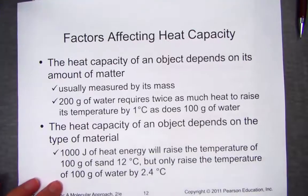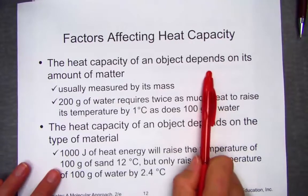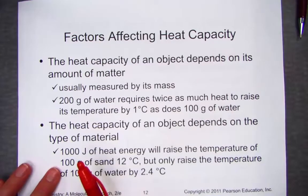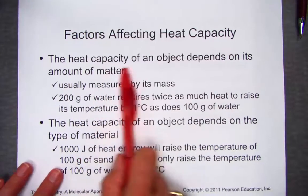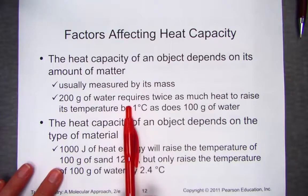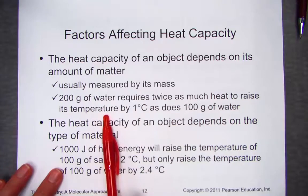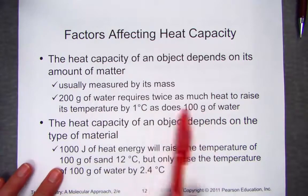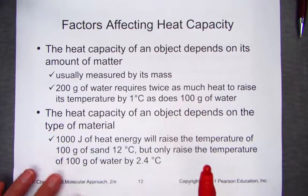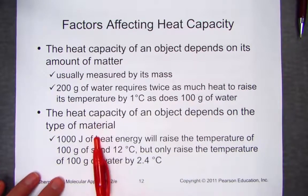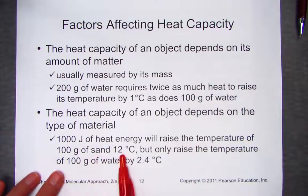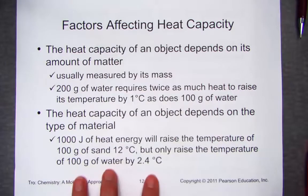The factors that affect heat capacity include what the object is made of and how much of the object you are measuring. Two hundred grams of water requires twice as much heat to raise its temperature as 100 grams of water — that direct proportionality. It also depends on the type of material: a thousand joules of heat energy will raise the temperature of sand by 12 degrees Celsius, but the same amount of energy warms water by only 2.4 degrees. Water has a much higher heat capacity than sand.